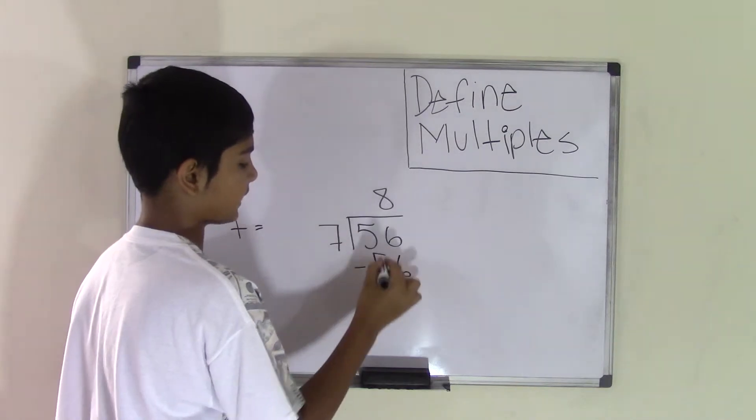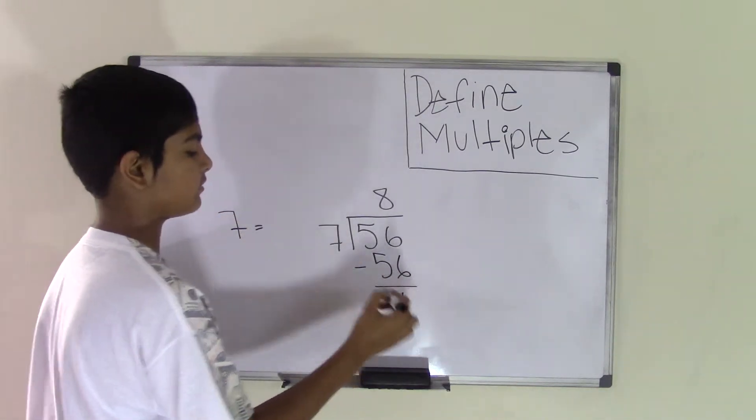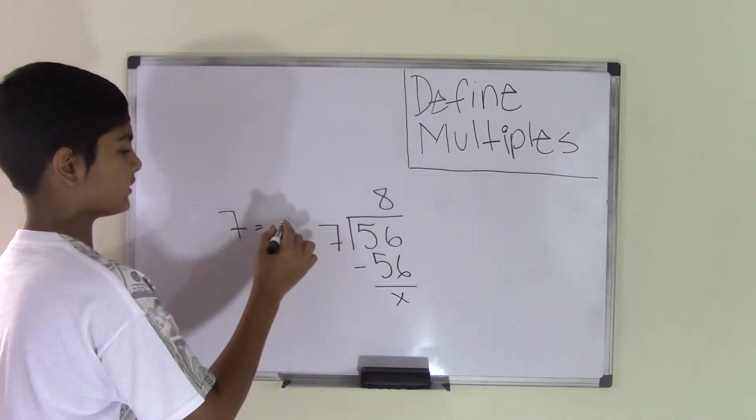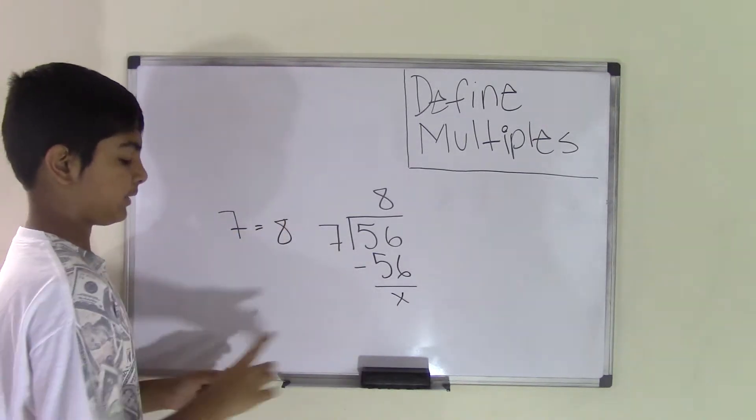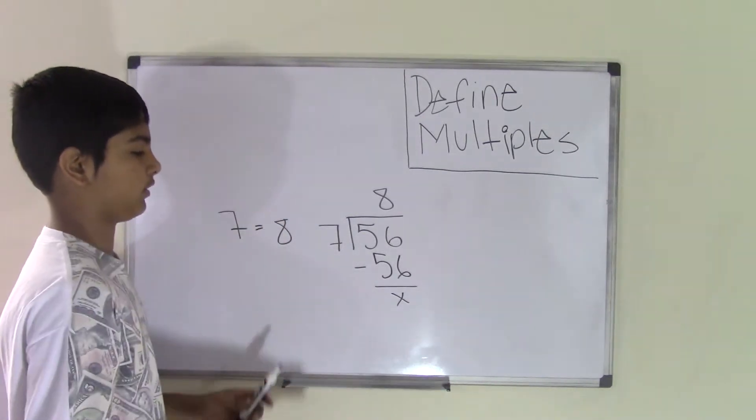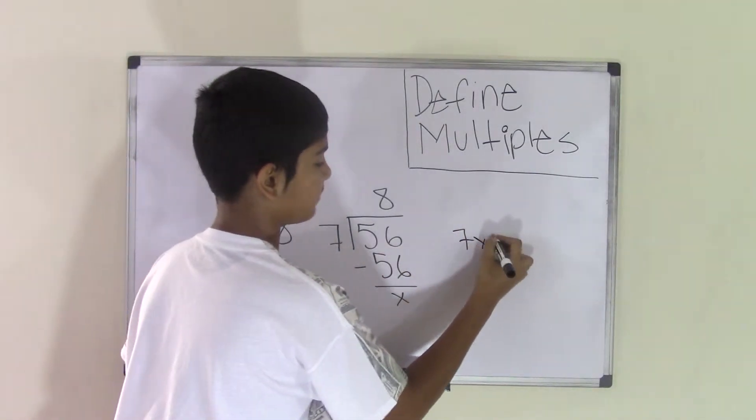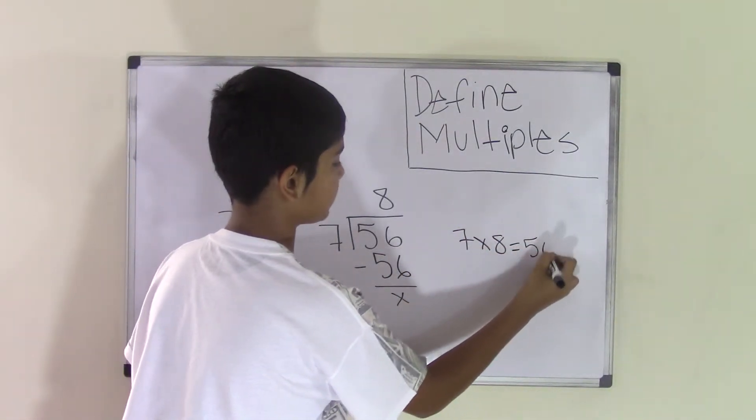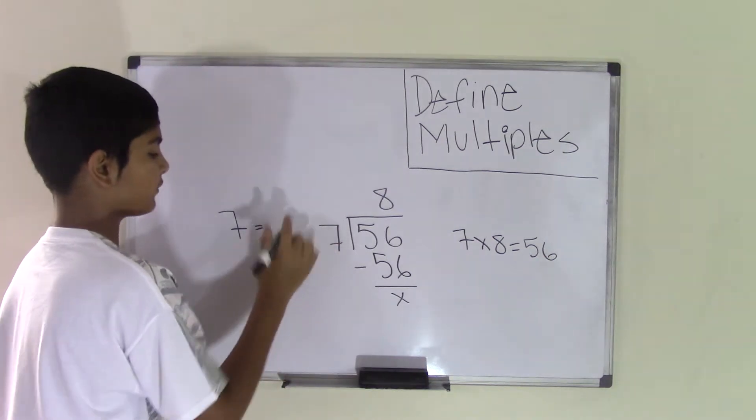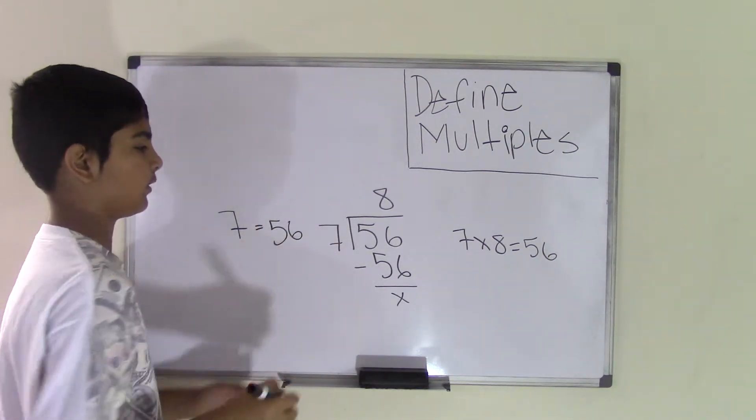And we know that 7 times 8 is 56. And since you're dividing, 56 goes into 56 evenly. 56 is a multiple of 7 because 7 times 8 is equal to 56. So, 56 is a multiple of 7.